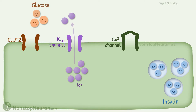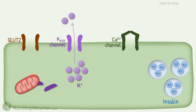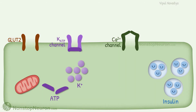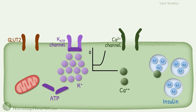When blood glucose rises, more glucose enters the beta cells through GLUT2. Metabolism of glucose produces ATPs. Increased ATP level causes inhibition of ATP-sensitive potassium channels. This results in decreased potassium efflux and its accumulation in the cell. The resultant depolarization opens the voltage-gated calcium channel, and calcium ions rush into the cell, causing insulin release.